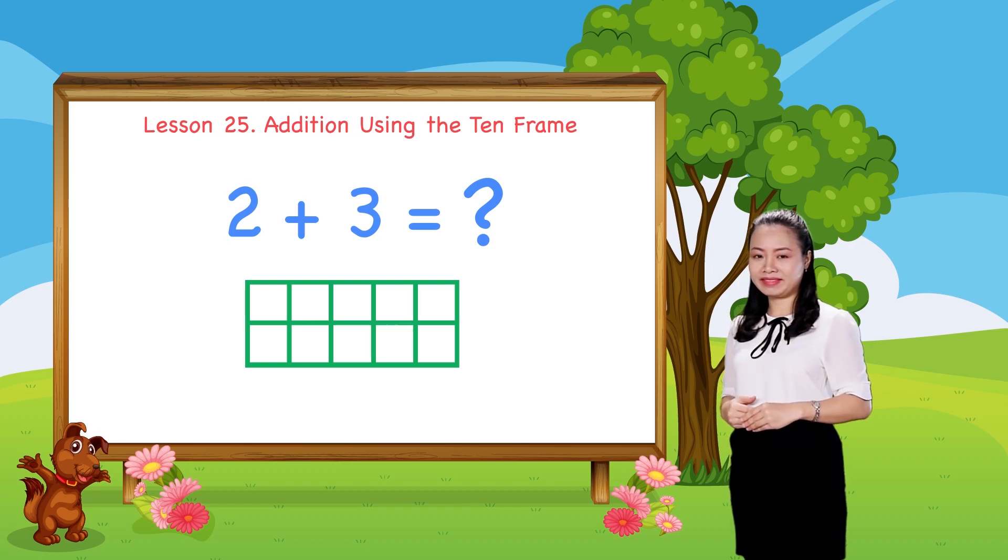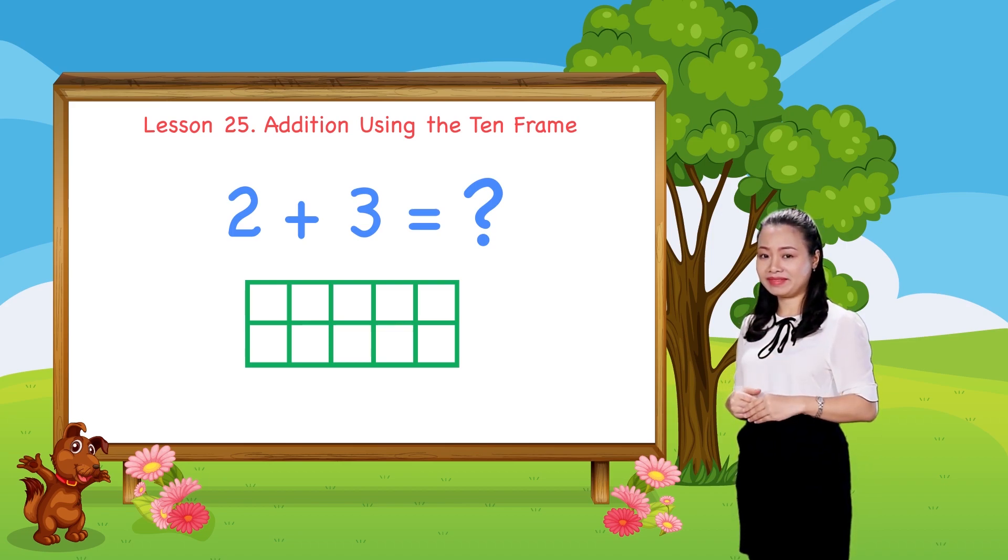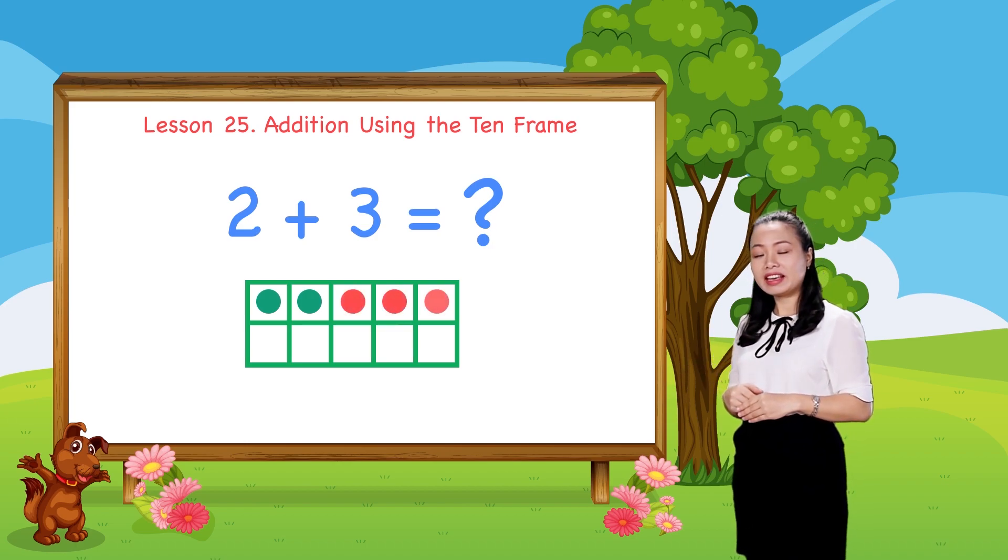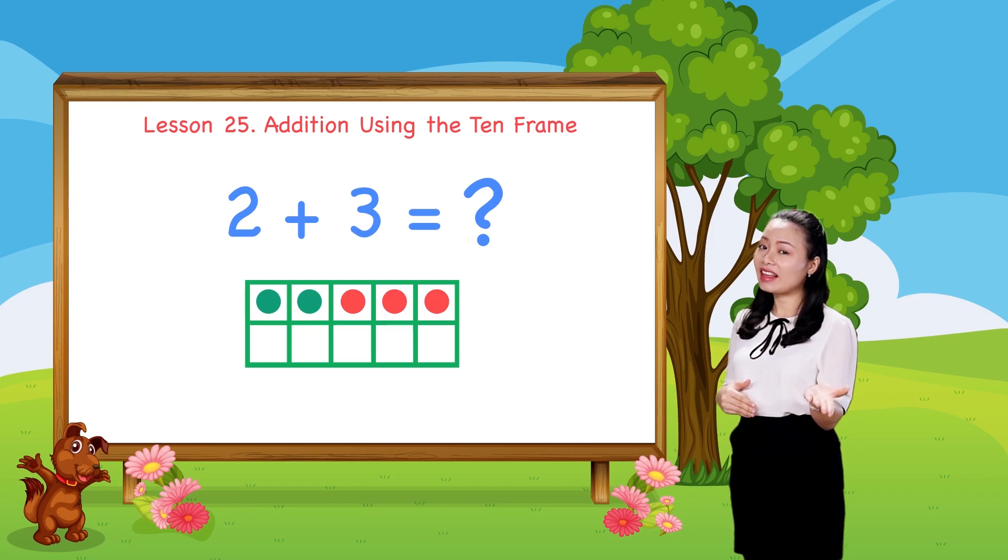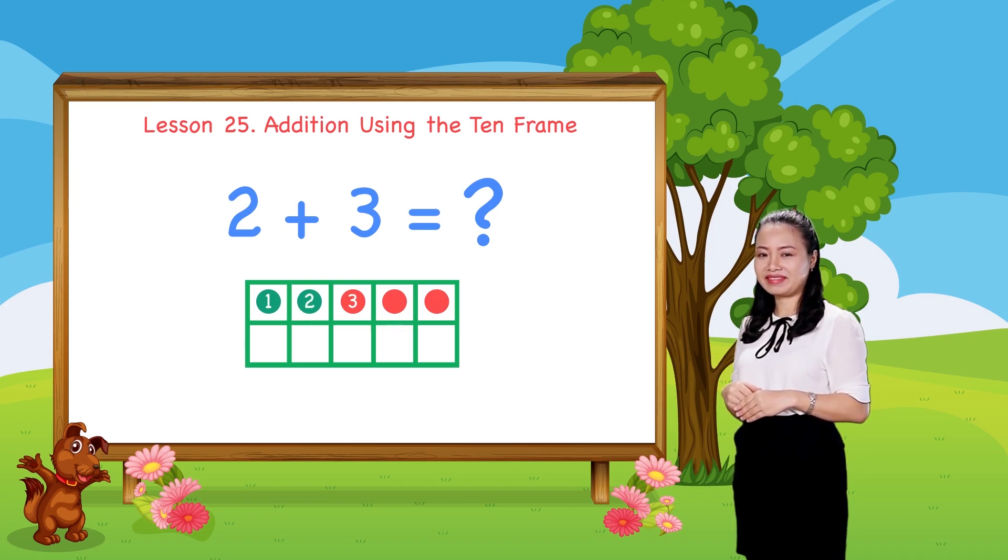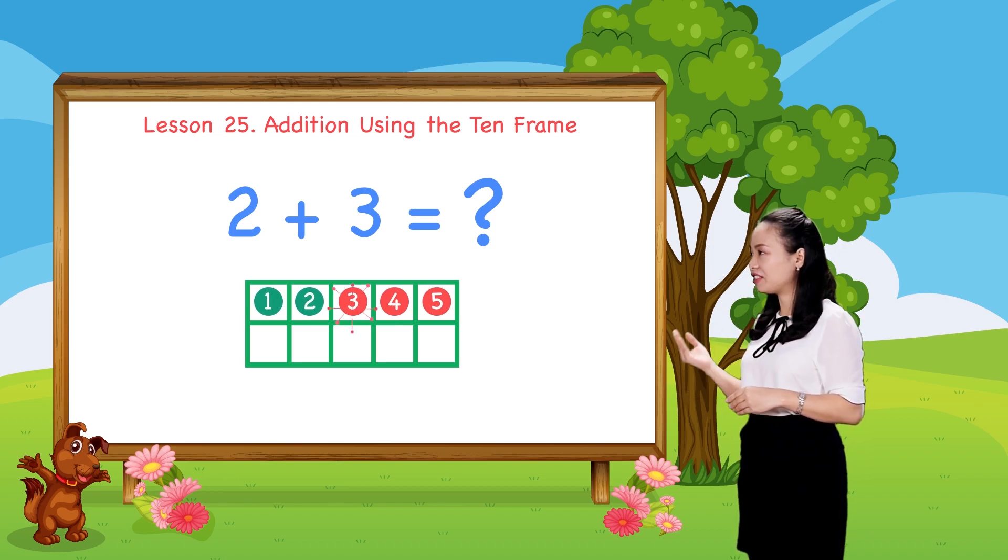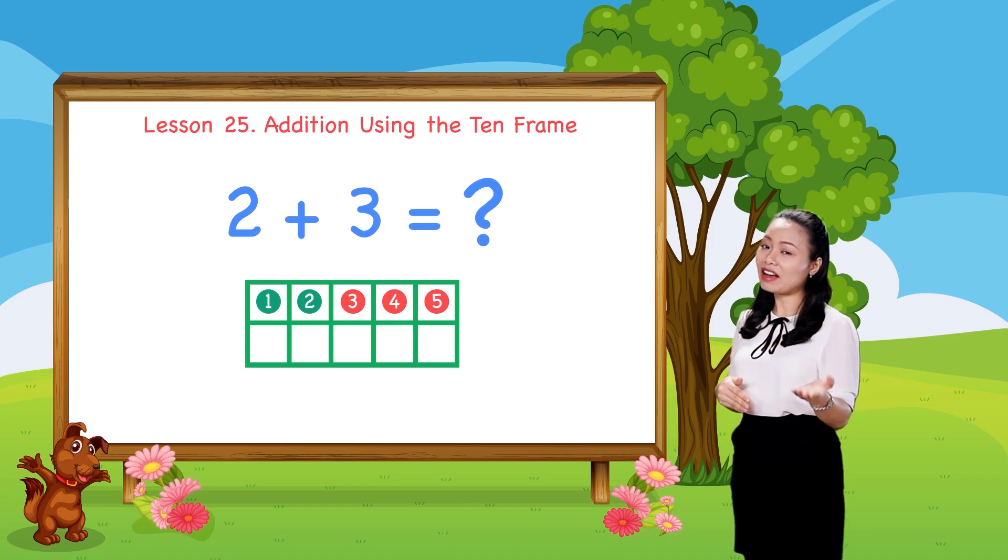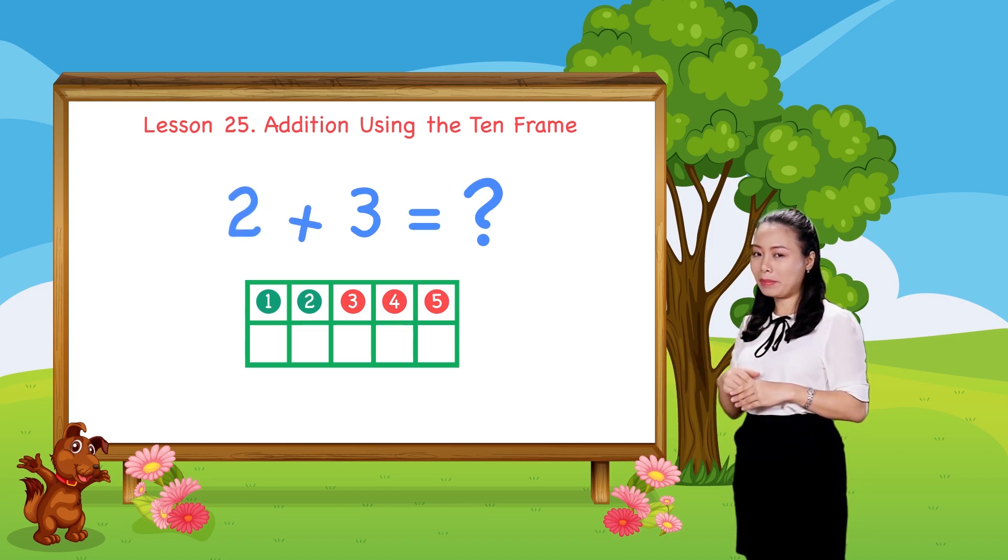To find 2 plus 3, we draw 2 dots. Then, 3 more dots in the 10 frame. Then, count the total number of dots to find the sum. Let's count. 1, 2, 3, 4, 5. So, 5 dots in total. Therefore, 2 plus 3 equals 5.